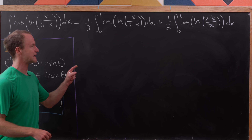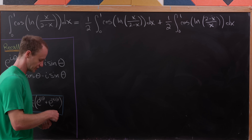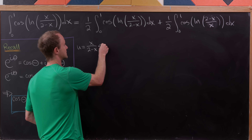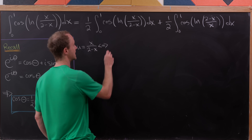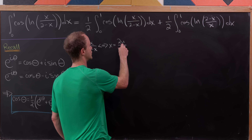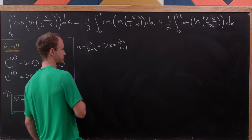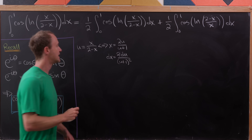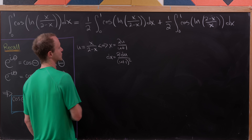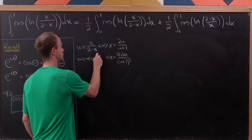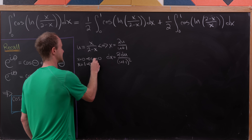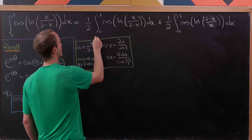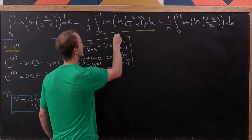Now I'm going to perform a substitution on each of these integrals. For the first integral, we set u equal to x over (2 minus x). Inverting that substitution, x equals 2u over (u+1), and dx equals 2 du over (u+1) squared. When x equals 0, u equals 0, and when x equals 1, u equals 1, so the bounds of integration don't change. We'll use this substitution for the first integral.